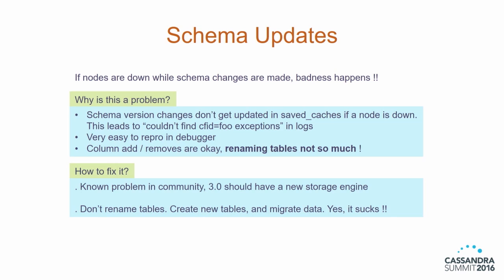Schema updates is another rough area — and I'm not talking about two people doing updates at the same time, just one person. But if nodes are down in big clusters while you are doing schema updates, bad things happen. The CFID for the table changes as you make specific schema updates. The saved caches subsystem of Cassandra maintains an in-memory cache of the CFID and doesn't reflect the new value, so you get a bunch of 'couldn't find CFID' exceptions in logs and eventually the node will crash. Column add and removes are okay, but renaming tables is not because that changes the CFID. There is no good fix — it's a known problem in the community — and the new storage engine in 3.0 should fix this.